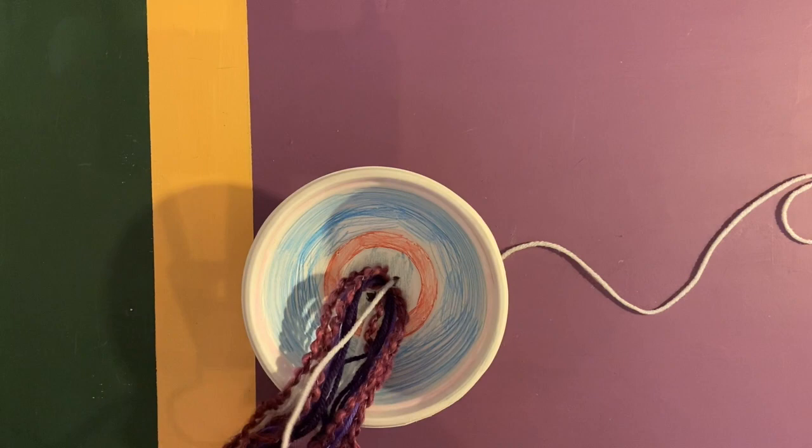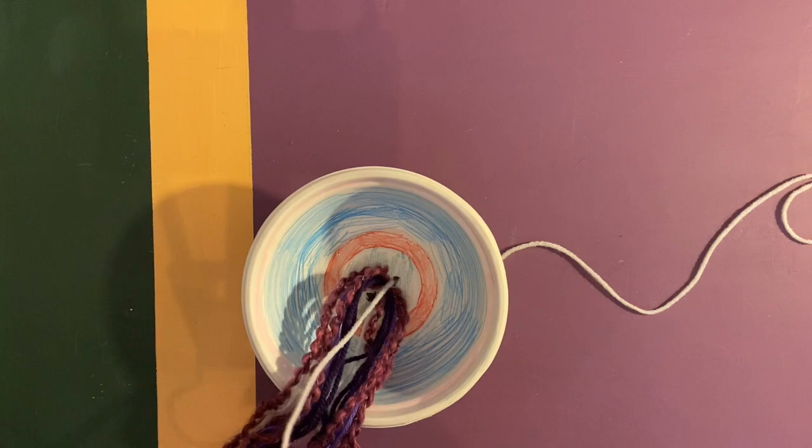Now, take the string from the bottom and tie all your yarn together so that it resembles the tentacles of a jellyfish.